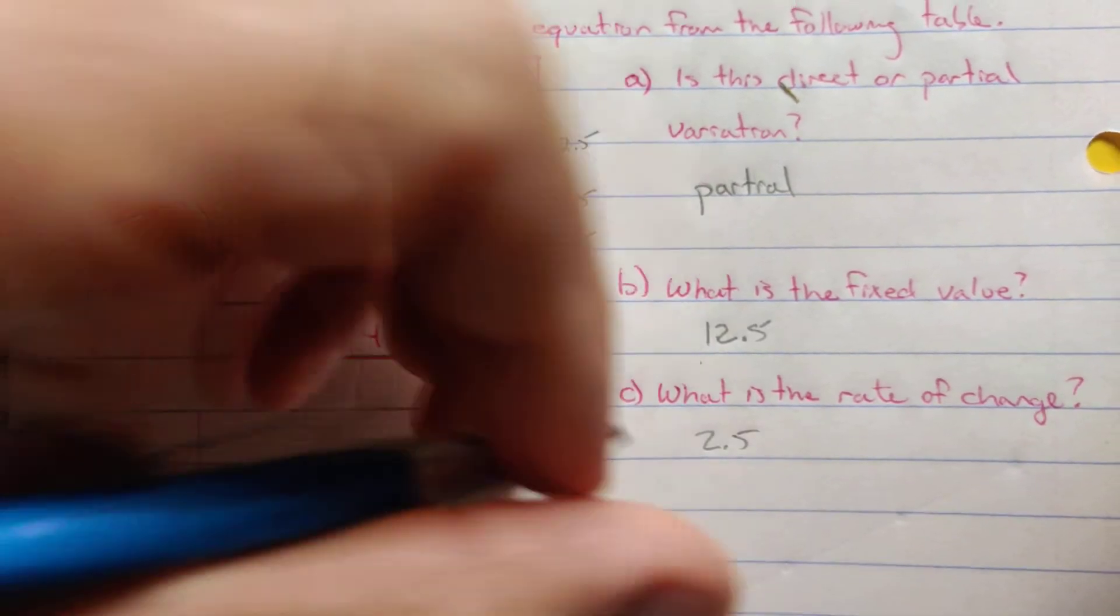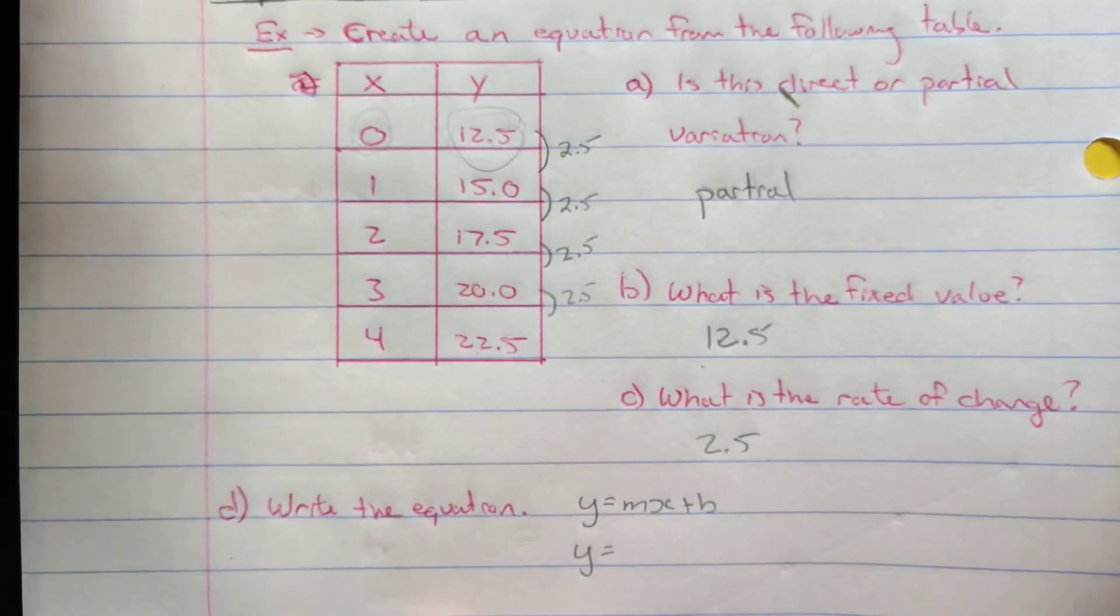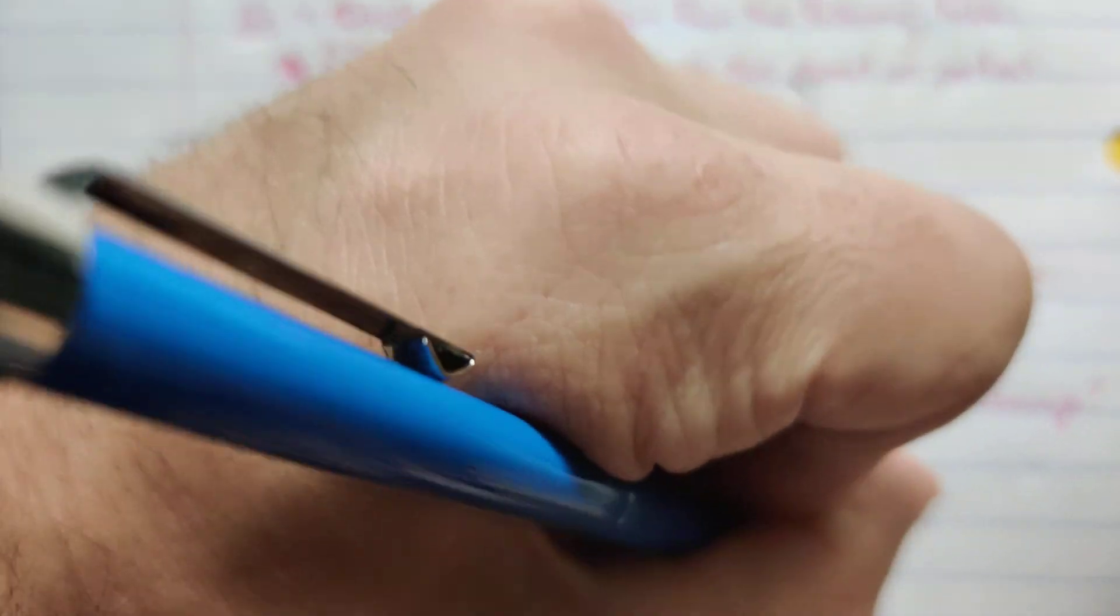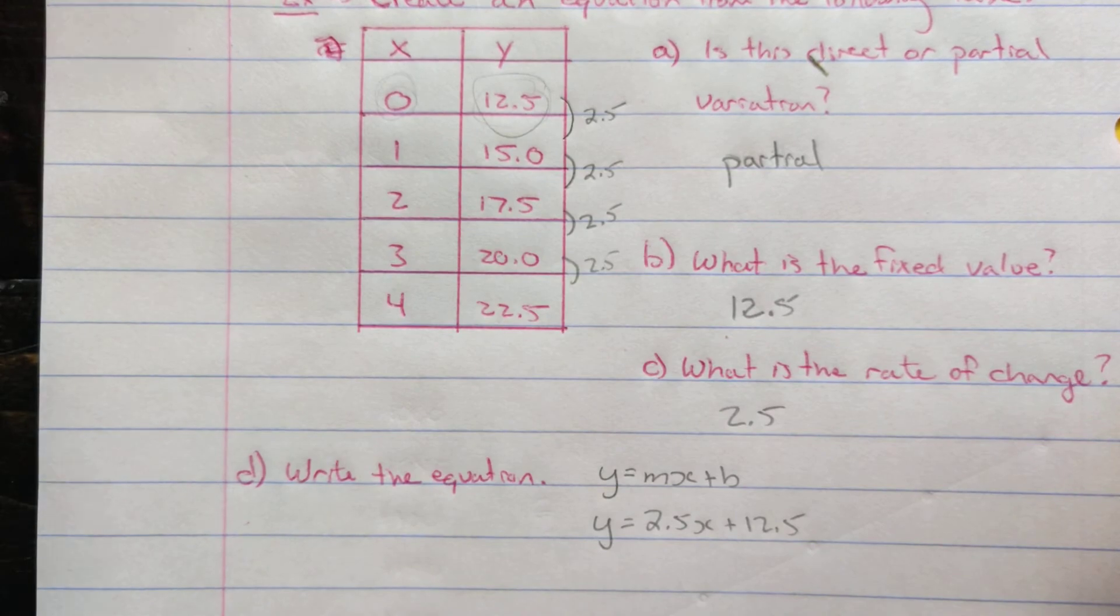So we want to write now the equation. y equals mx plus b is our general form. So our y equals the rate of change, 2.5x plus 12.5.